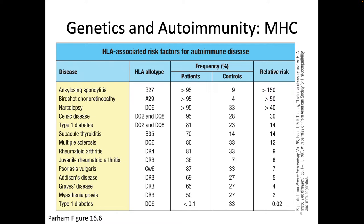For example, with ankylosing spondylitis, patients have a dramatically increased frequency of a particular HLA type — HLA-B27. If you have that HLA type, you are much more likely to end up with ankylosing spondylitis, because you could be presenting a problematic self-antigen. Conversely, with type 1 diabetes, you are unlikely to have HLA-DQ6. So there are situations where having a particular MHC type makes you super susceptible, and others where it makes you much less susceptible.